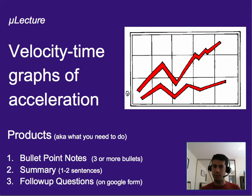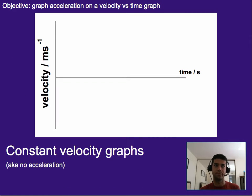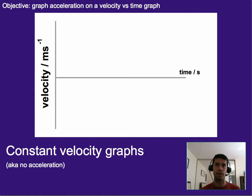As always, you need three bullet points worth of notes, one to two sentences in the summary, and you need to do the follow-up questions on Google Form. So as we get started, let's go ahead and review a little bit first. In the previous unit, we talked about velocity graphs as showing constant velocity, so when motion was uniform.